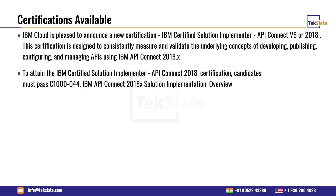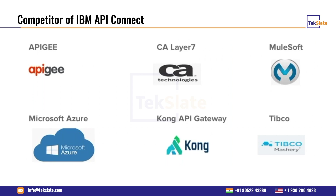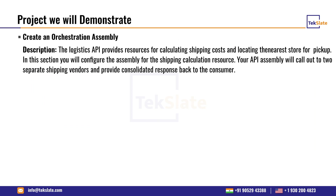Regarding competitors: one of the toughest competitors for IBM API Connect is Apigee (APG). Others include CLAR7, MuleSoft (to some extent), Microsoft Azure API Management, Kong API Gateway, and TIBCO Mashery — all popular gateway products competing in this space.